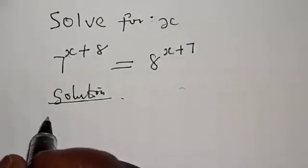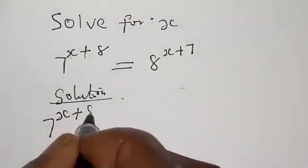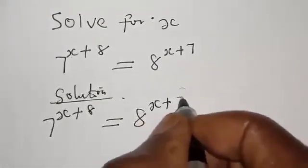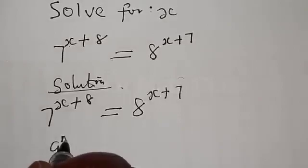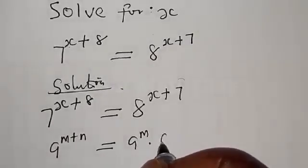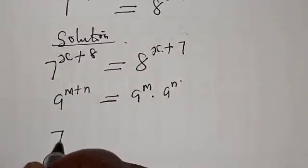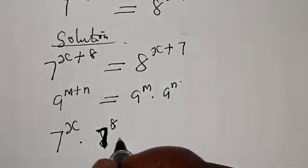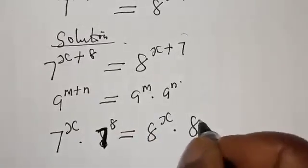Solution. We have 7 raised to the power x plus 8 is equal to 8 raised to the power x plus 7. We recall that if you have a raised to the power m plus n, it is the same thing as a raised to the power m multiplied by a raised to the power n. So this equation can be rewritten as 7 raised to the power x multiplied by 7 raised to the power 8, equal to 8 raised to the power x multiplied by 8 raised to the power 7.